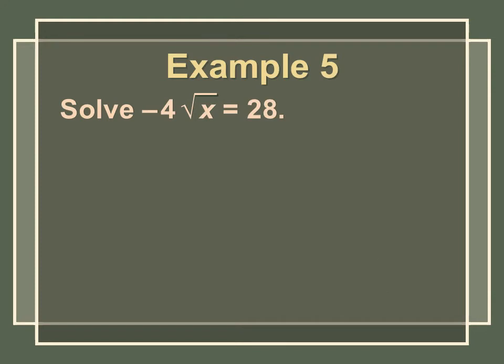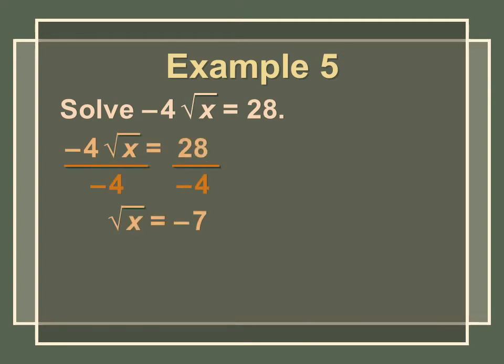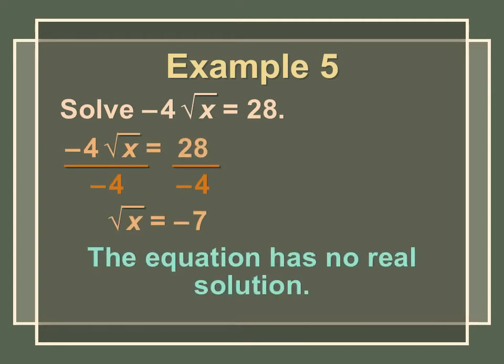Let's try this one. The radical is not isolated because we have a −4 in front, which is being multiplied by the square root of x. To undo multiplying by −4, divide both sides by −4, giving √x = −7. However, we know that a square root can never equal a negative number, which means this equation has no real solution.